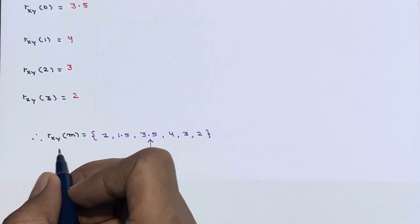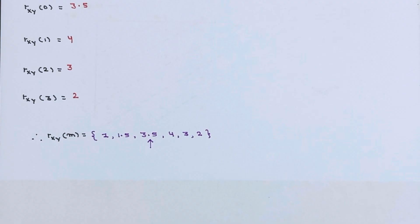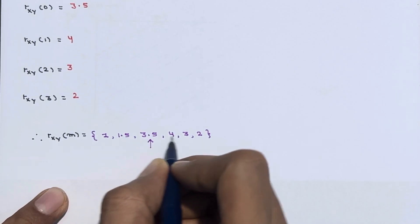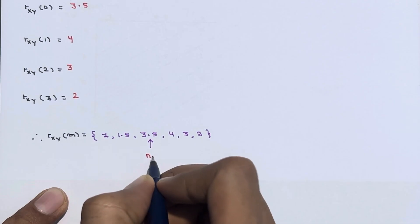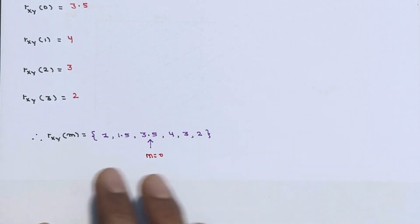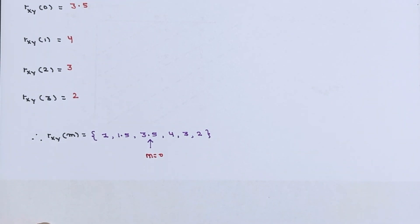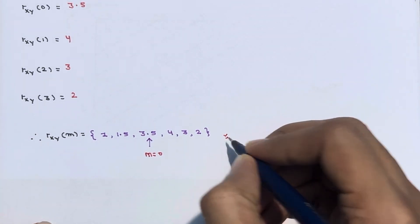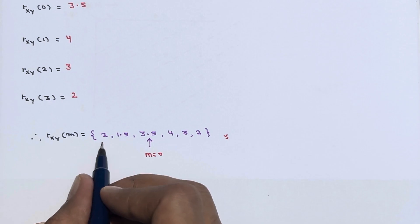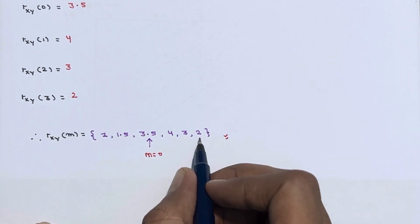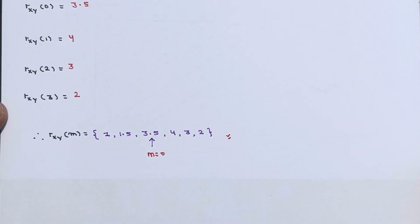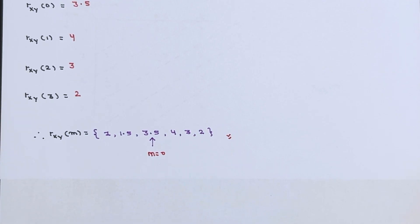The final result: r_xy(m) = {1, 1.5, 3.5, 4, 3, 2}, where m=0 is indicated by the arrow. This contains 6 samples as expected, starting from m=-2 and ending at m=3. If you still have any doubts about this question, you can ask in the comment section. Thanks for watching.